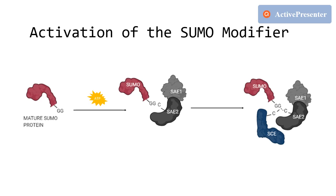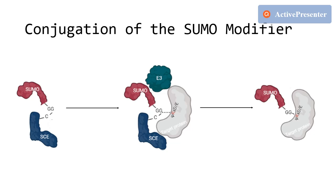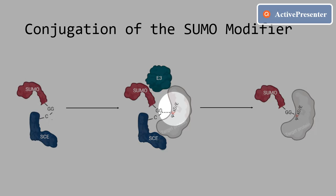The SUMO peptide is then transferred to the cysteine residue of the E2 SUMO conjugating enzyme via a transesterification reaction. Unlike in ubiquitination, this E2 can transfer SUMO directly to the lysine residue in the target protein. The lysine residue is usually in the consensus sequence shown here, where psi stands for a large hydrophobic residue, and X is any other amino acid.